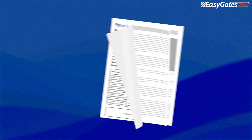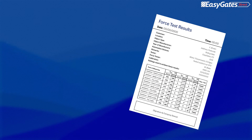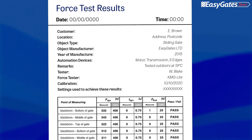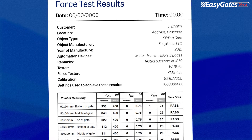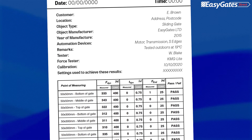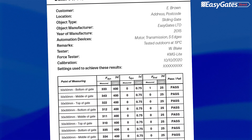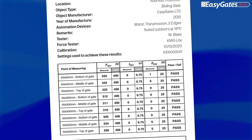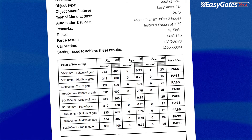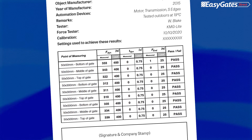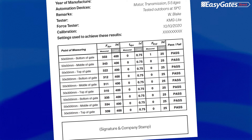Following completion of these tests on any type of gate, it is recommended to create a report or document presenting the values recorded, along with the location and details of the customer's gate, date and time, and conditions that the tests were carried out under. This information is vital to demonstrate compliance and provides written evidence that the gate was safe on the date of testing.